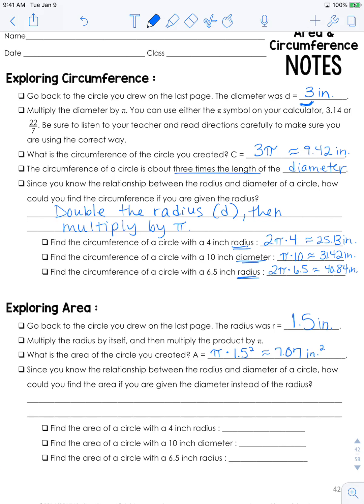Since you know the relationship between the radius and the diameter of a circle, how could you find the area if you are given the diameter instead of the radius? Well since the diameter is twice the radius, you would have to divide the diameter in half, or divide by 2.